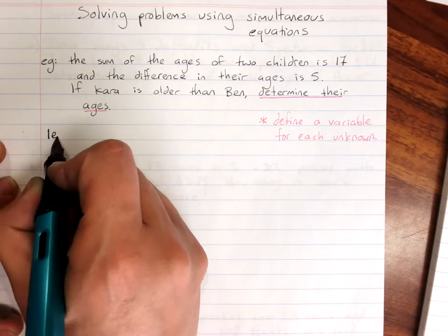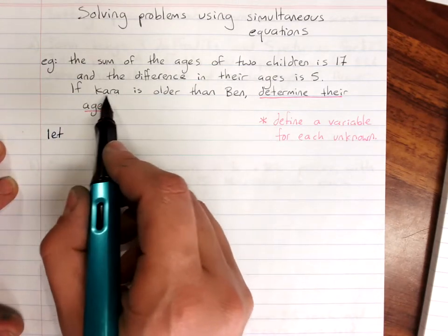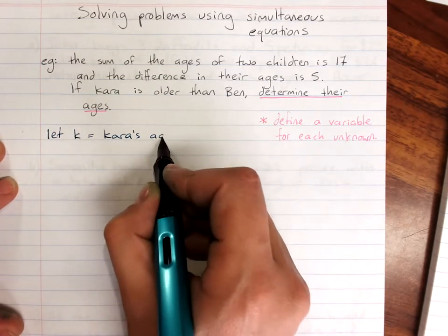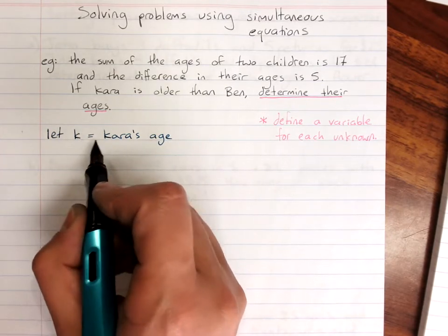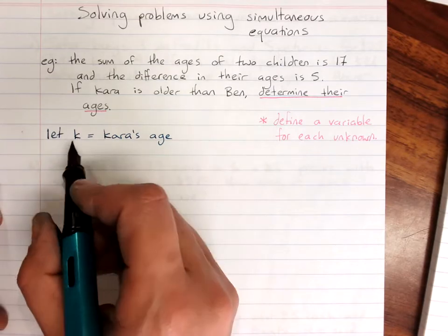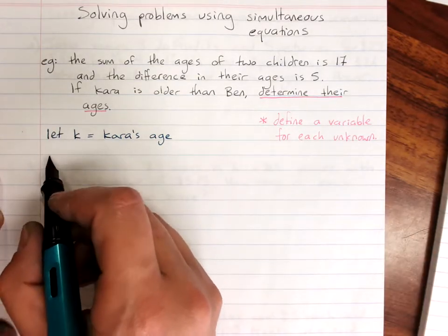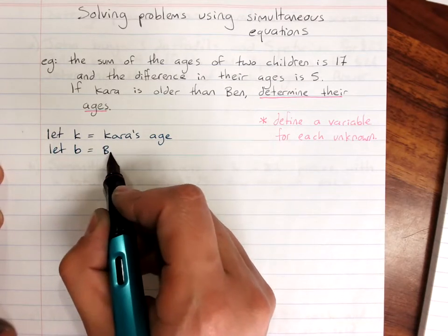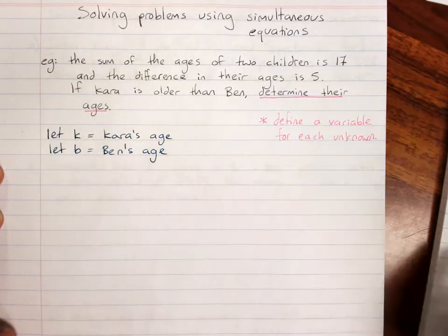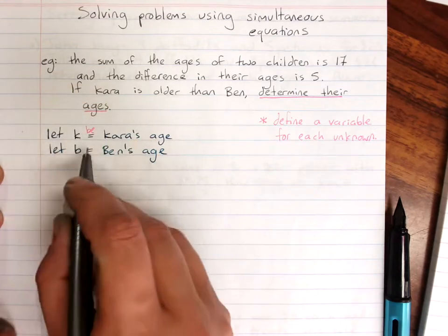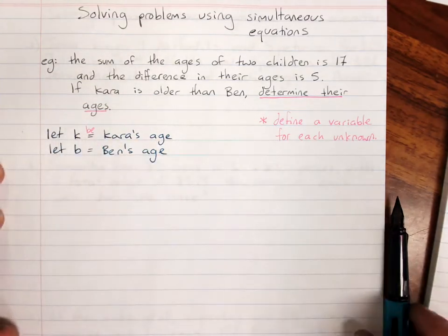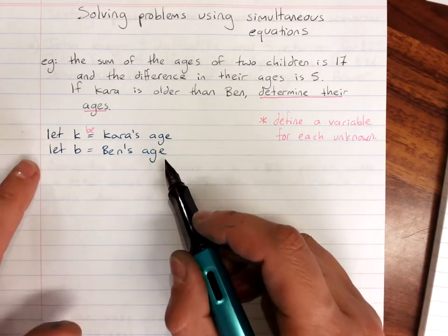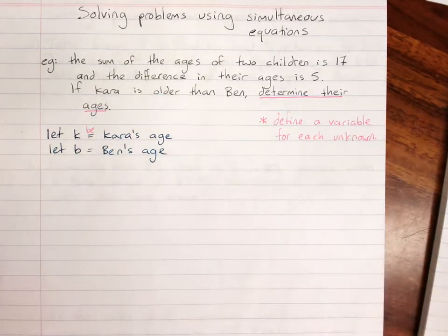So when you define your variable, you say let. Now, you might as well keep it sensible. If you've got a name, use K equal Kara's age. You can use B here if you prefer. Let K be Kara's age. Be the word or you can have equal. I don't mind on that. Let B equal Ben's age. So writing that as B instead of equals, that would be fine if you wanted. I wouldn't mind that. So you have defined a variable for each of your unknowns and you have been very clear about exactly what your unknowns are.